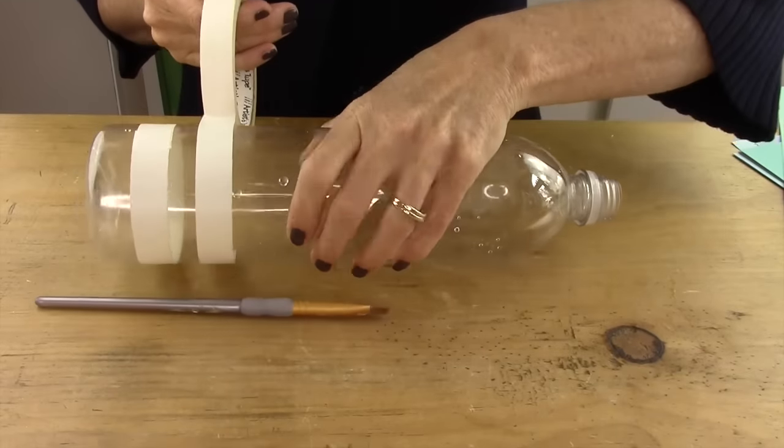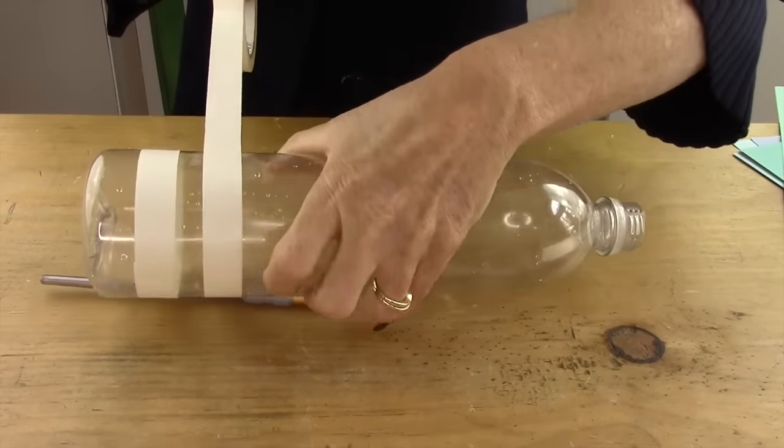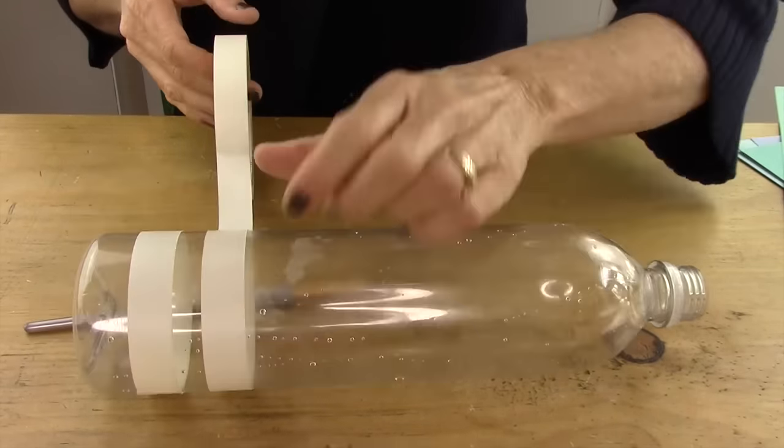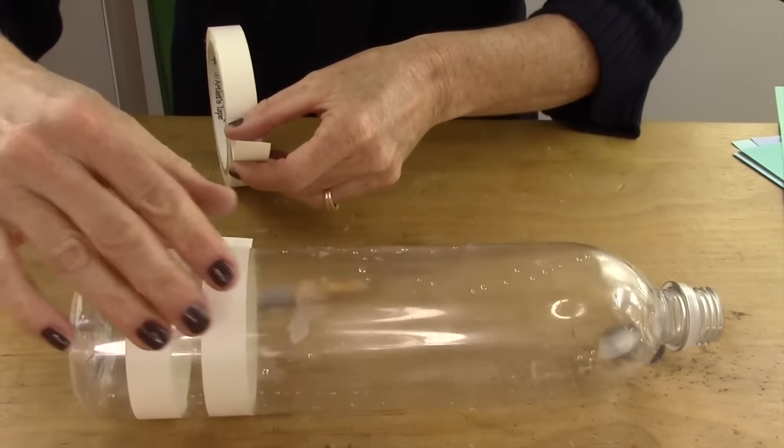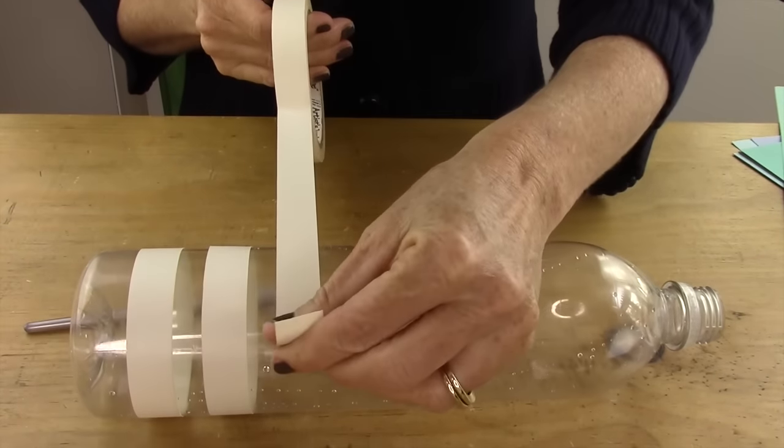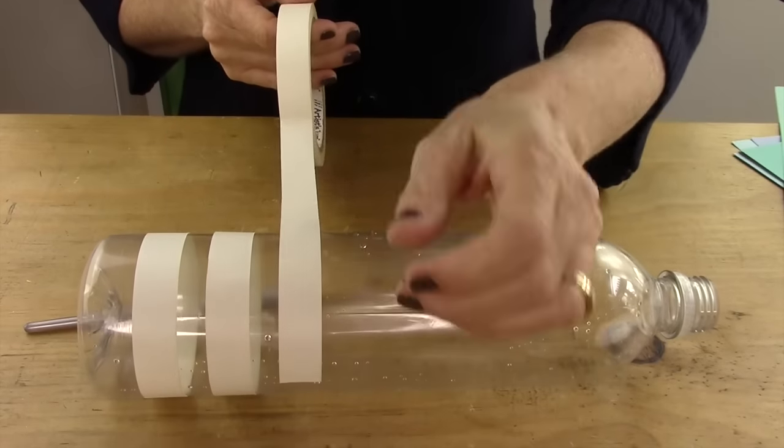Wrap it around the bottle and that will give you the circumference of your bracelet. Do that all the way up the bottle for as many bracelets as you want.